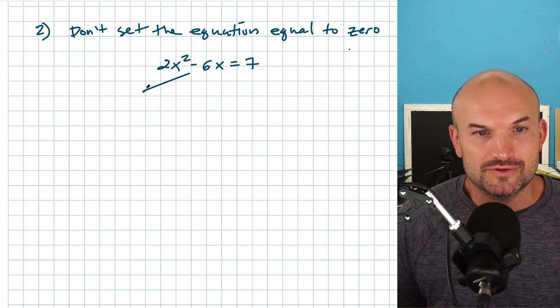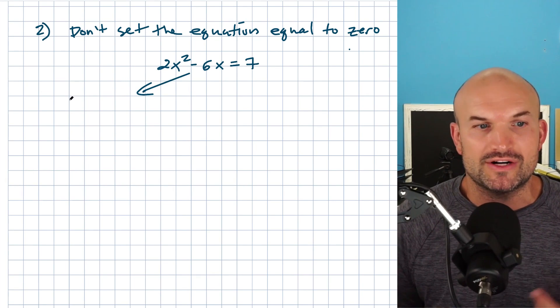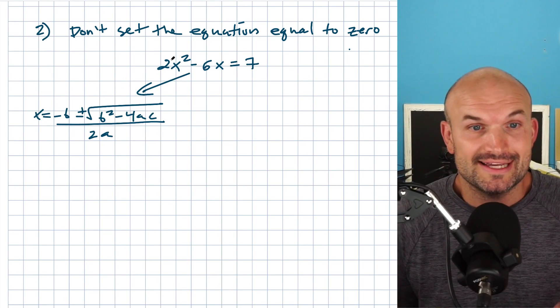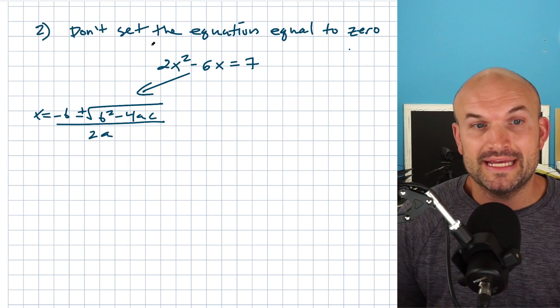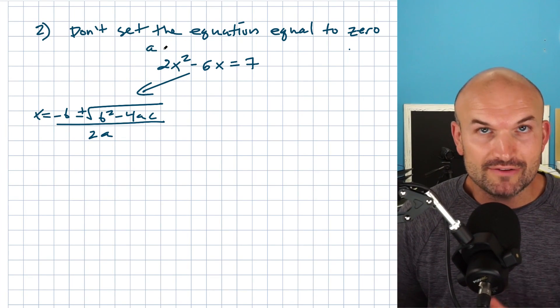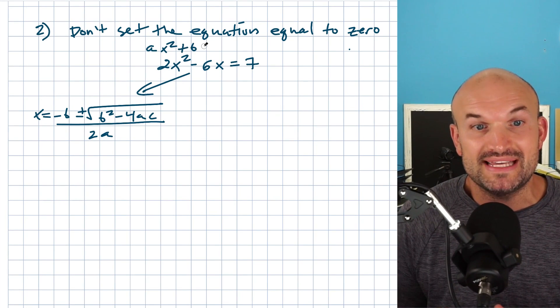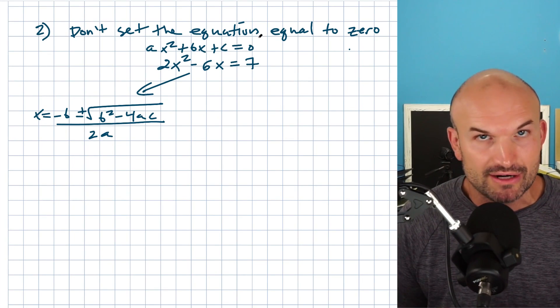One of the key mistakes that students will make is they'll say, well, let me just go ahead and use the quadratic formula. And we say, okay, yeah, that's a great idea. But the problem is if you don't already set it equal to zero, your A, B, and C are going to be incorrect, right? Because remember, the quadratic formula comes from the standard form of AX squared plus BX plus C is equal to zero.